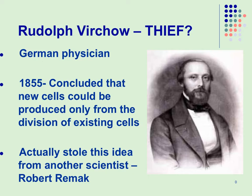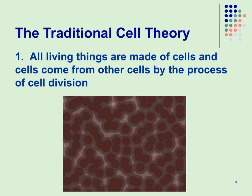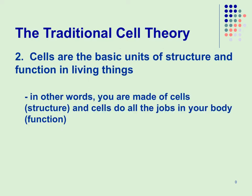Cell theory you should have learned in middle school, so hopefully this is just a quick review. The first part is that all living things are made up of cells — they can be either unicellular, meaning made up of one cell, or multicellular, meaning made up of many cells. The second part is that cells are the basic unit of structure and function, meaning cells have little organelles in them that carry out specific functions, which we'll talk about in videos to come.